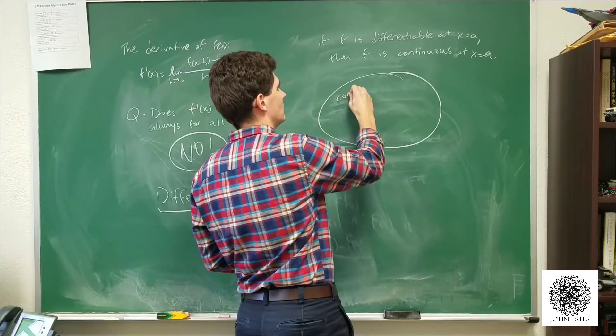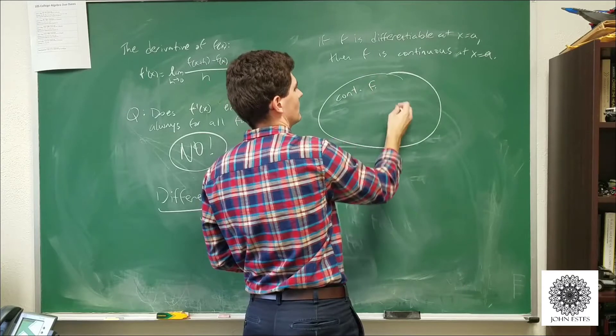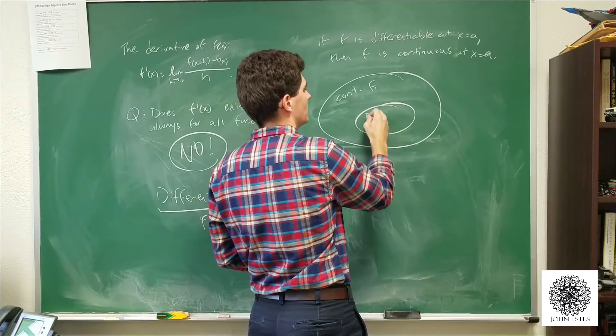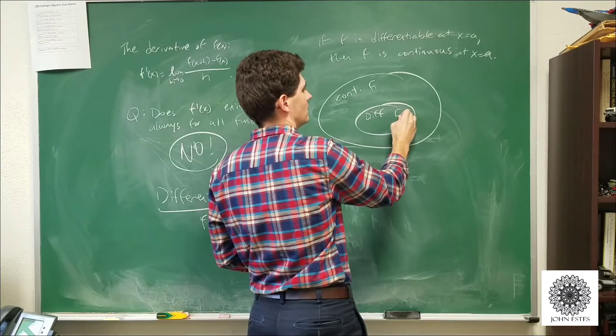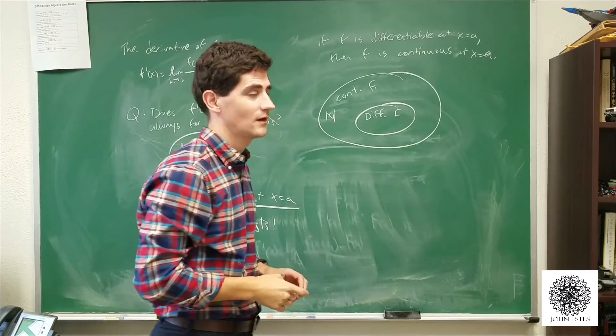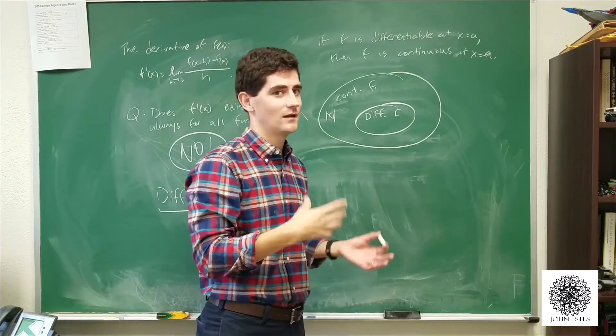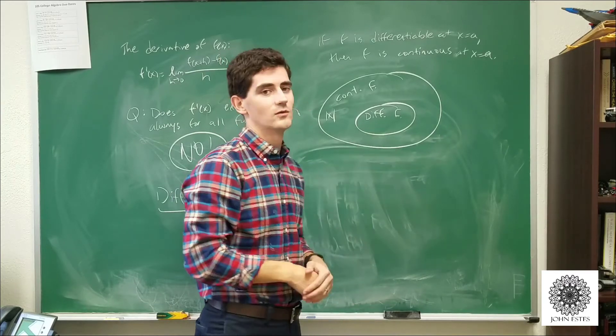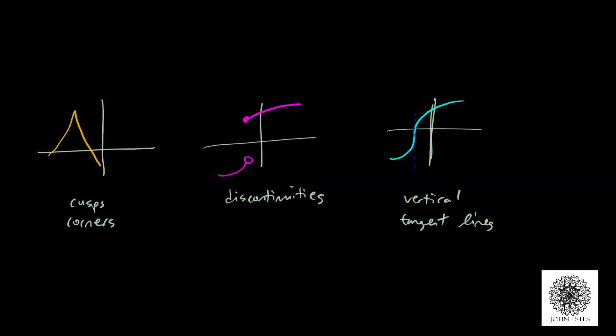So you can think about this in terms of set theory. Here we have the set of all continuous functions, but here we have the set of differentiable functions. And so there are examples, for example the absolute value of x, of functions that are continuous at a given point but not differentiable at that point.